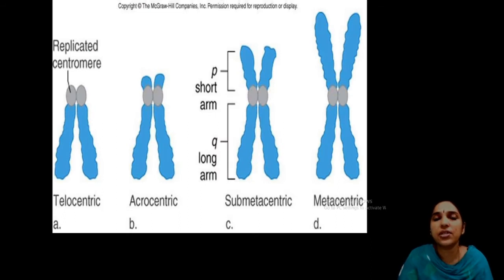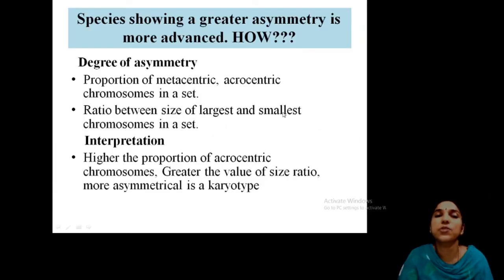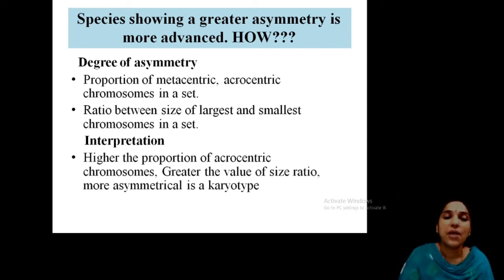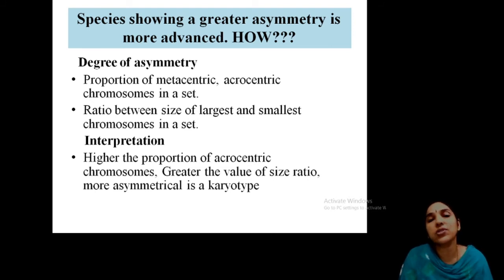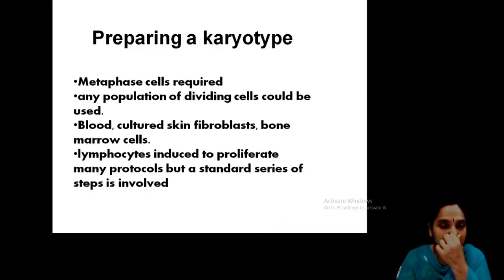The chromosome arms — P arm (short arm) and Q arm (long arm) — help identify chromosome types. When the centromere is at the tip, it is acrocentric; when exactly at the center, it is metacentric. Species showing greater asymmetry are more advanced. The ratio between the largest and smallest chromosome in a set shows the degree of asymmetry. The higher the proportion of acrocentric chromosomes, the greater the size ratio, and the more asymmetrical the karyotype — indicating a more advanced species.